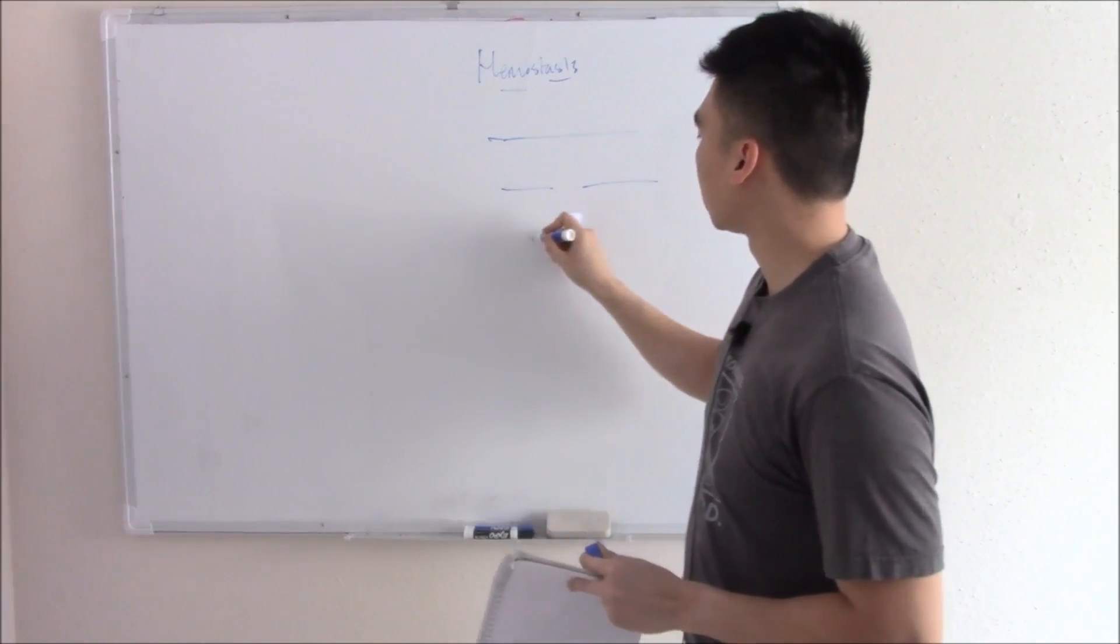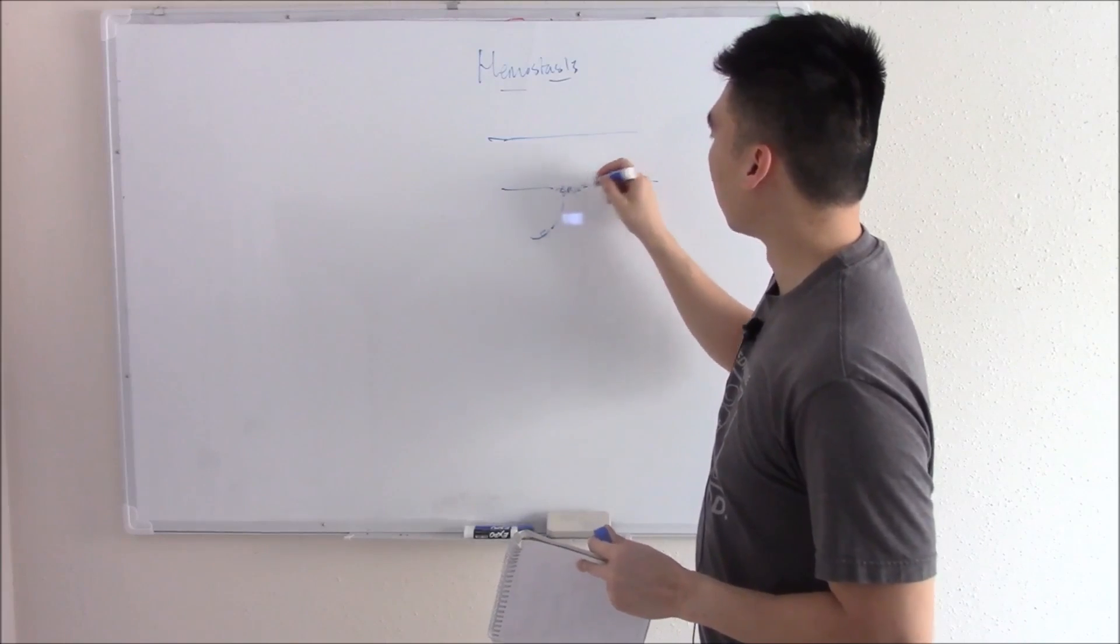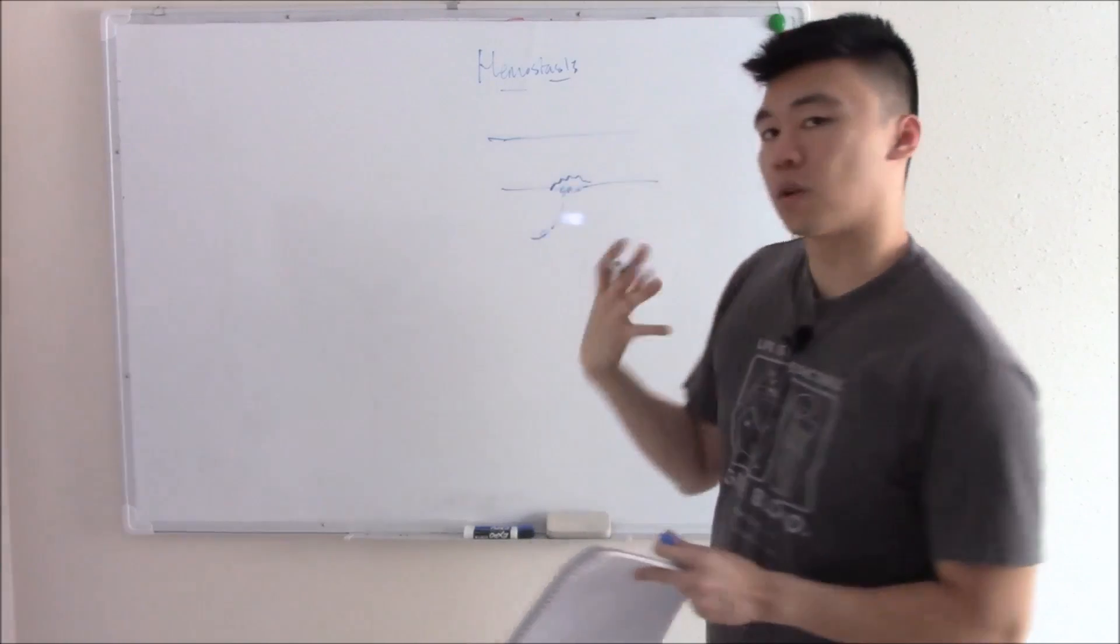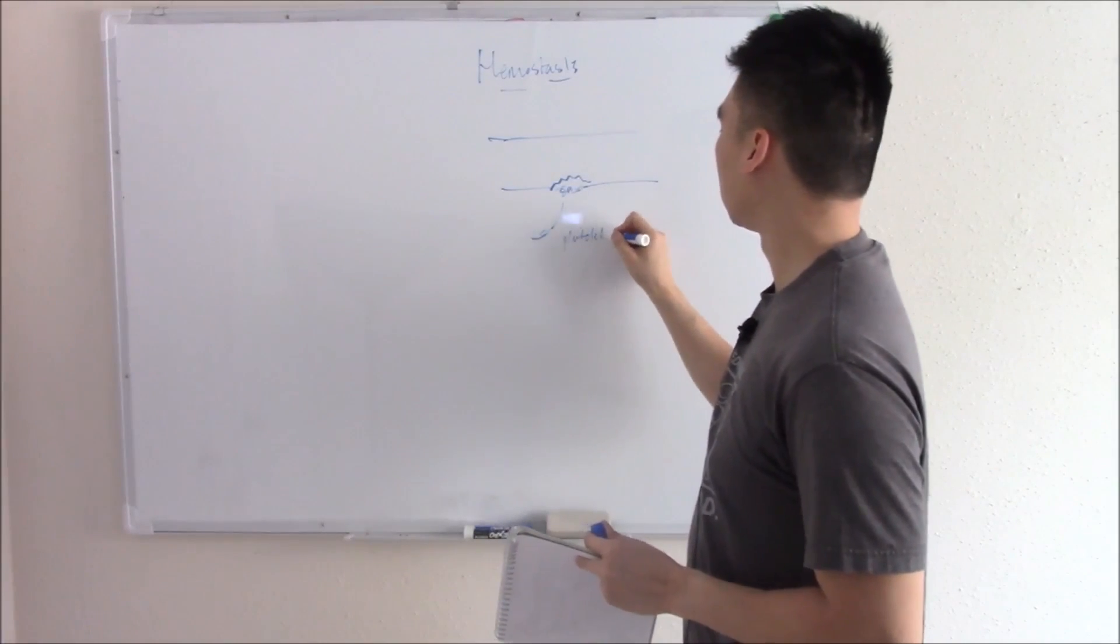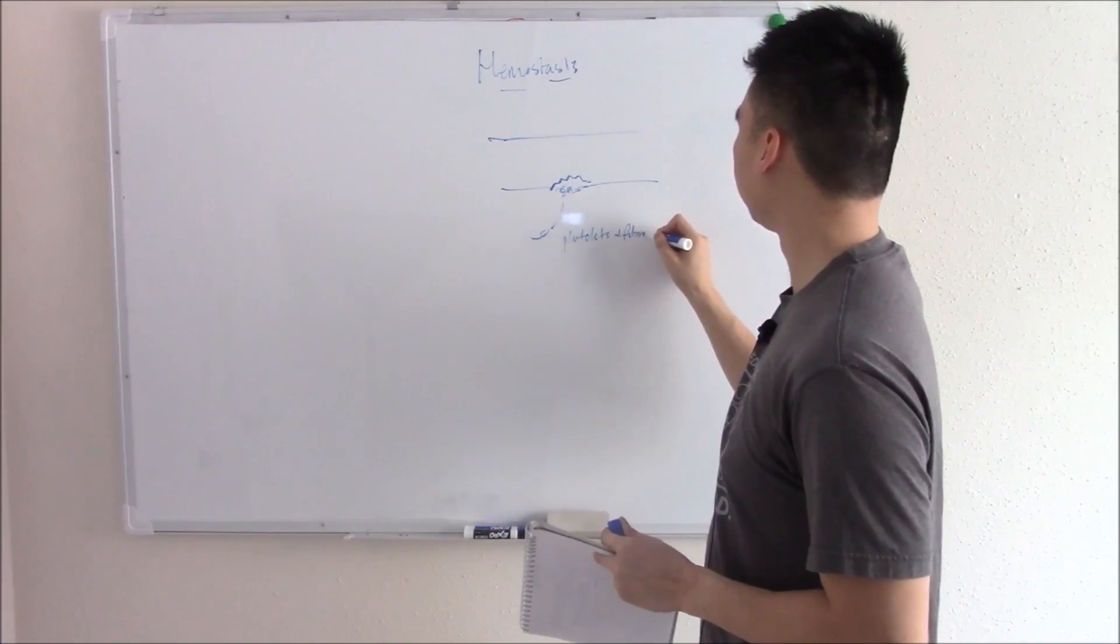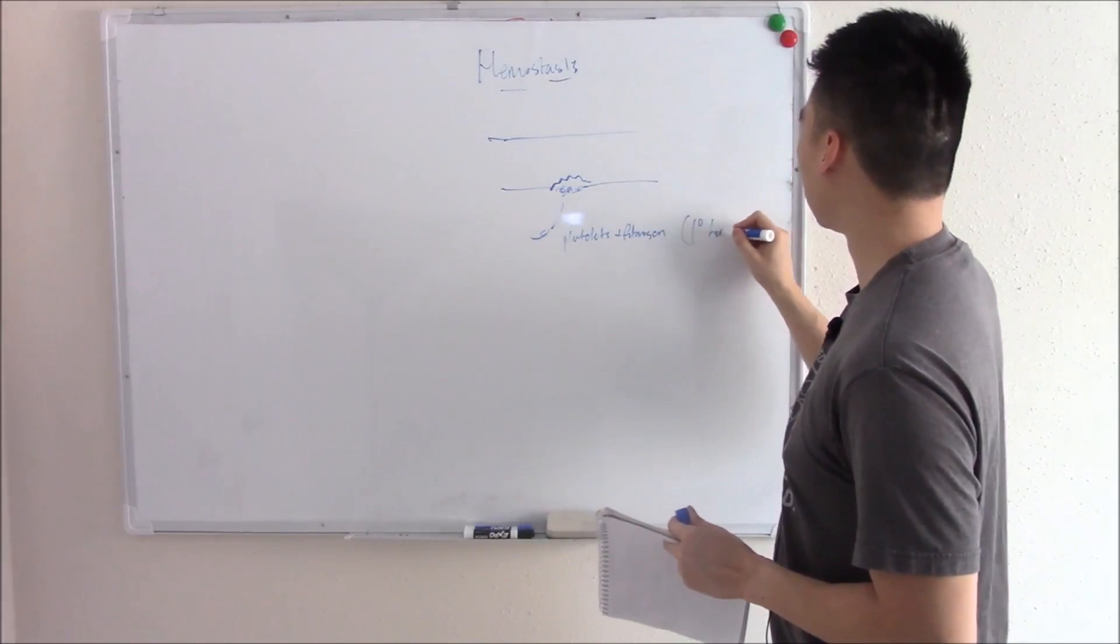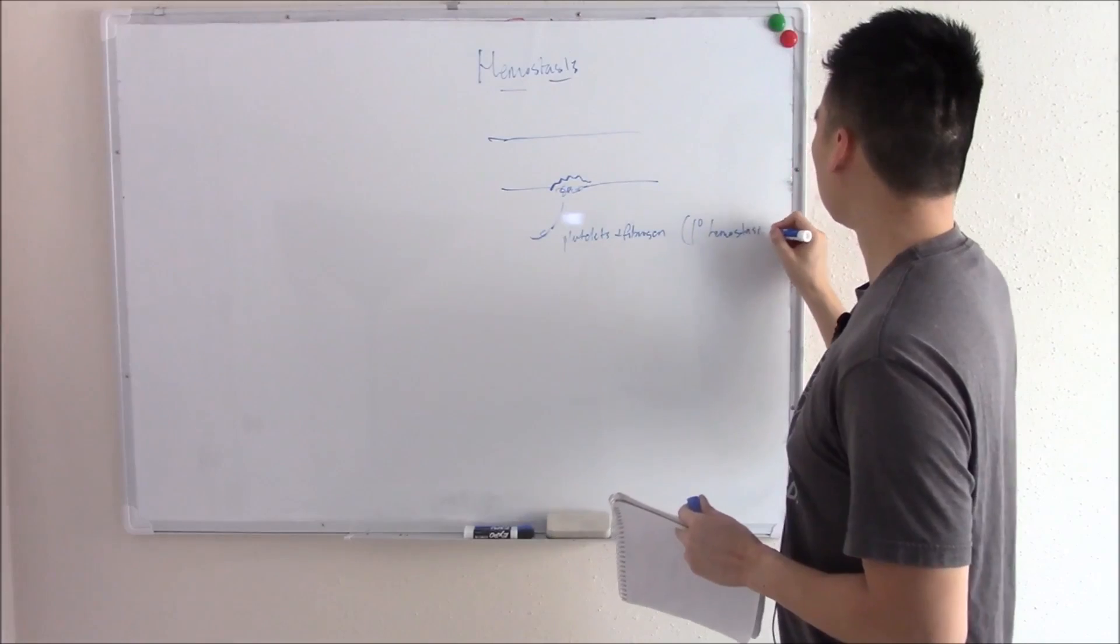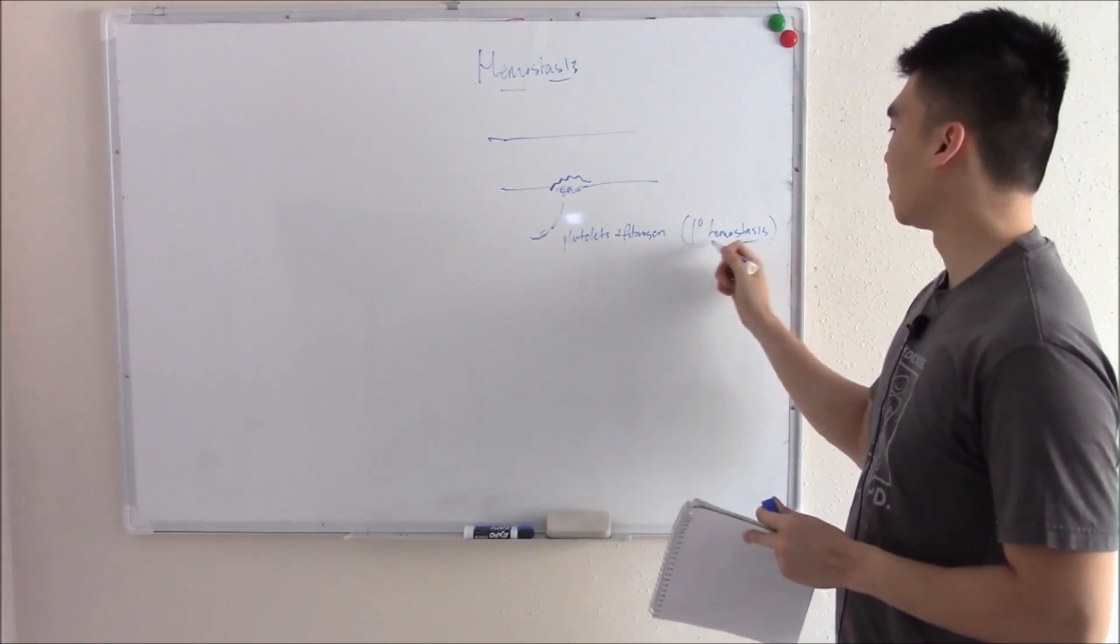At first, platelets come in and form this little plug that's draped by a protein called fibrinogen. Platelets plus fibrinogen, that we call our primary hemostasis, our first line of defense, our first way to stop the bleeding.